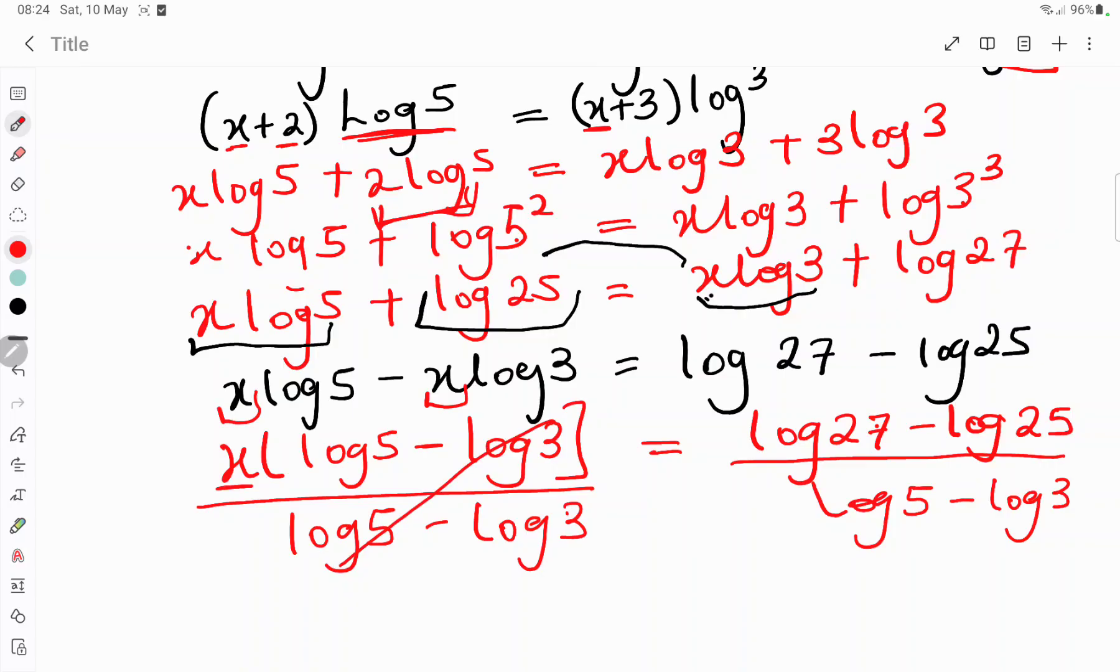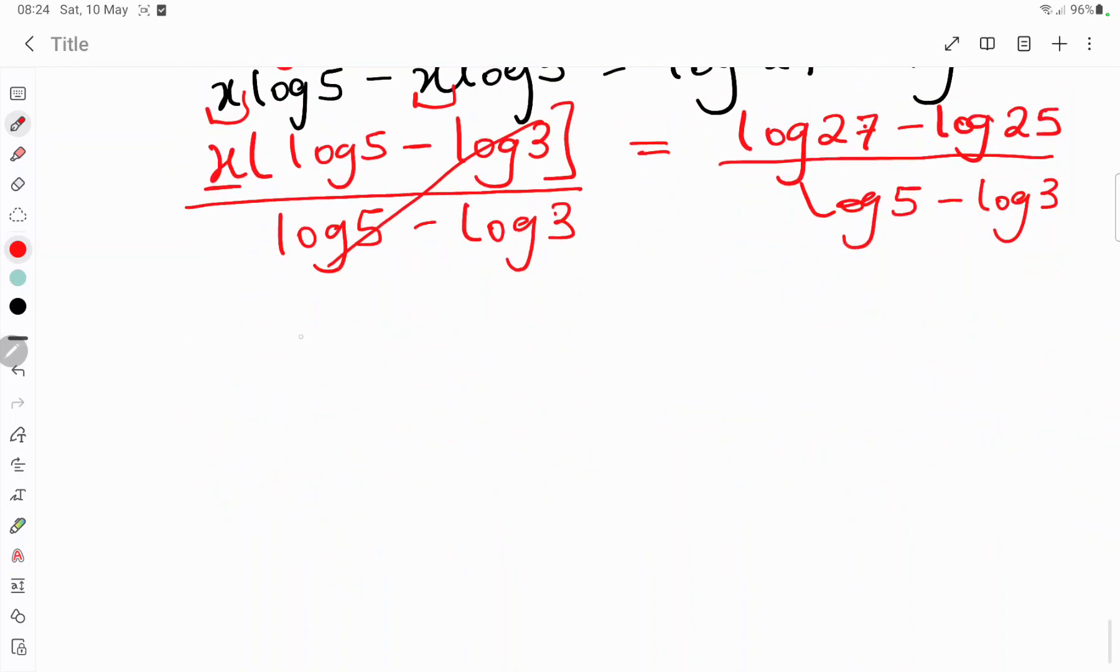When you divide through by this, you are seeing that x is equal to what? You will be left with log 27 minus log 25, then divided by log 5 minus log 3.